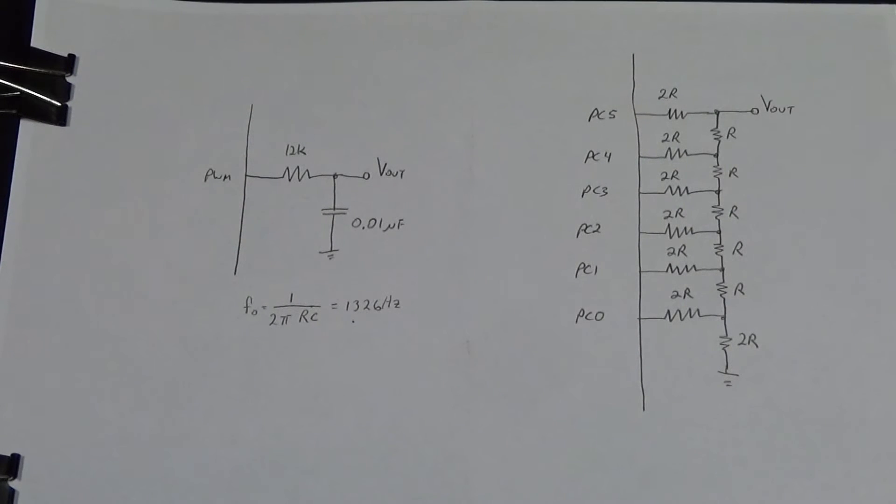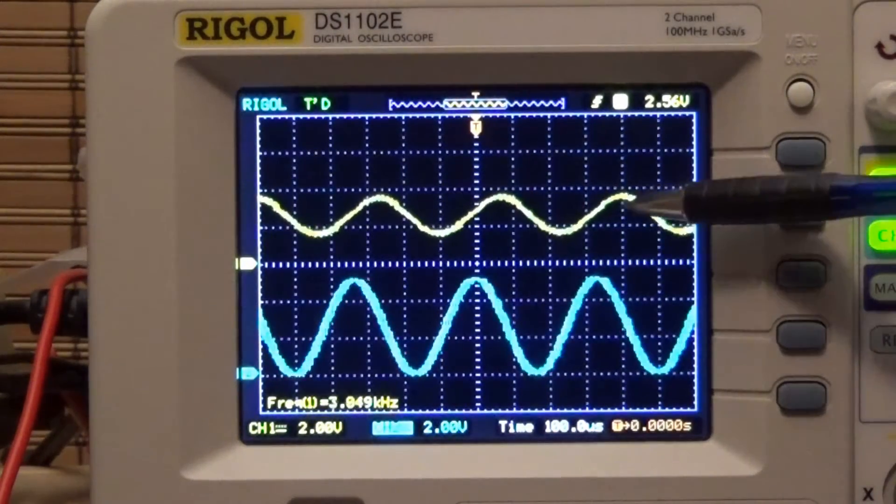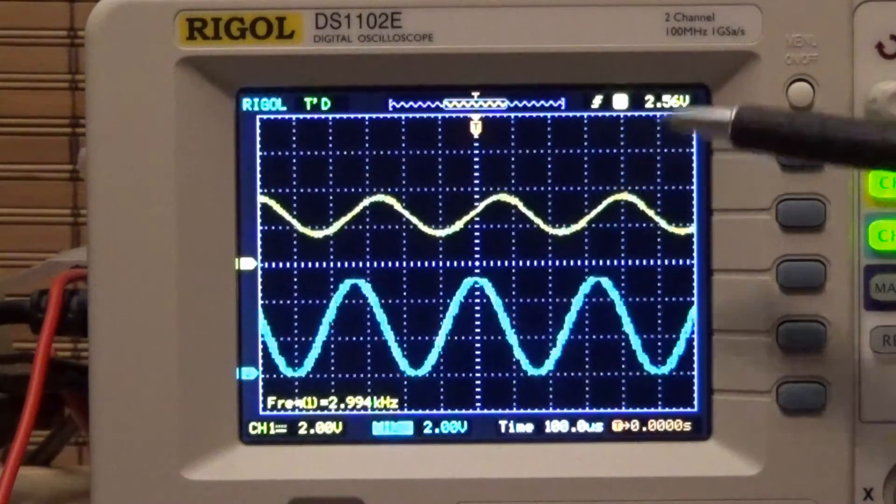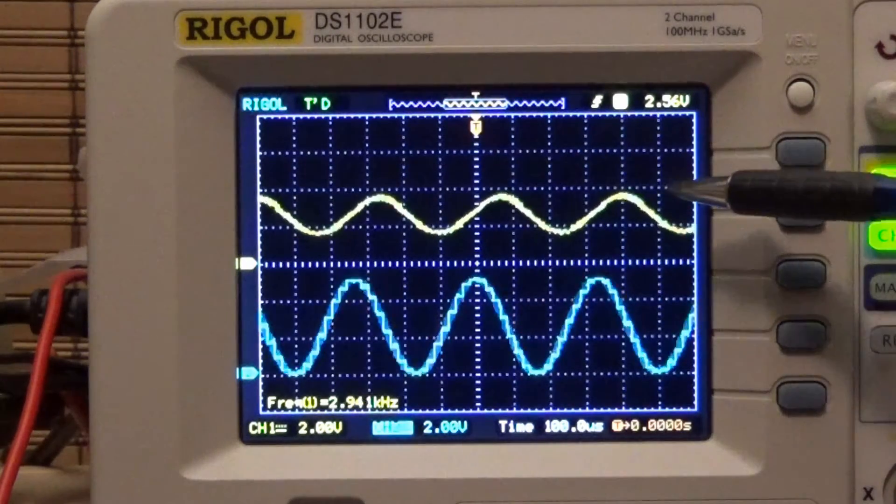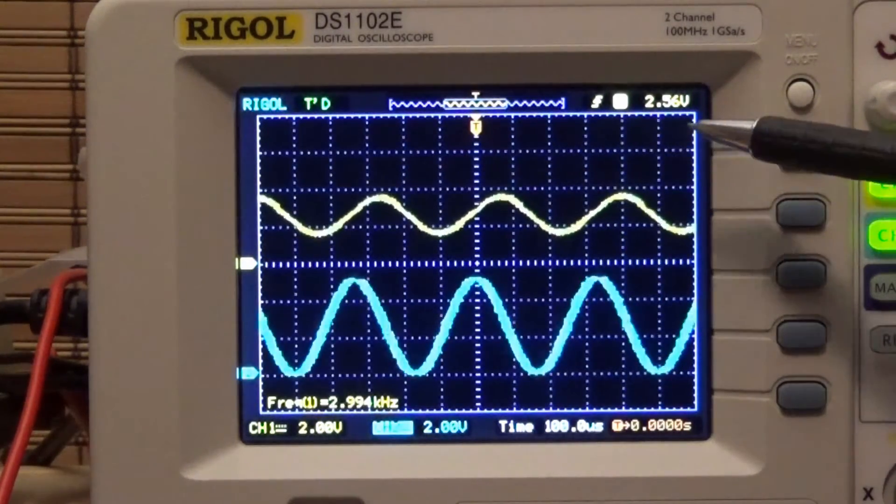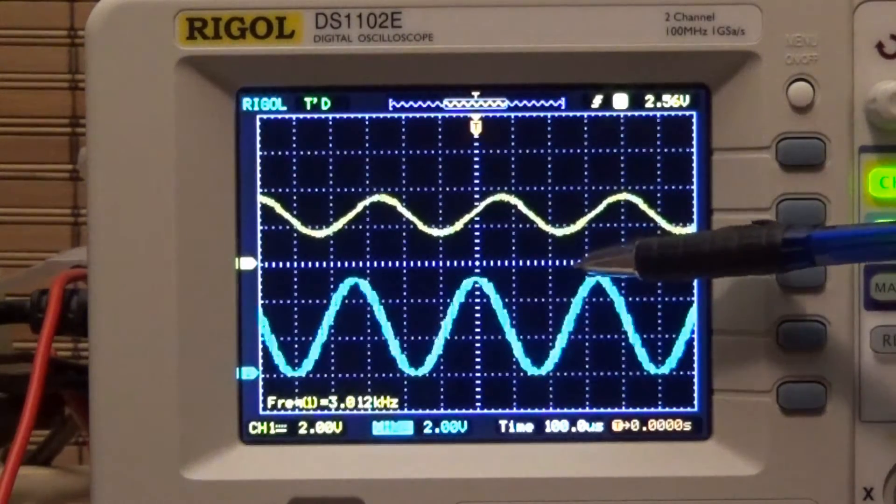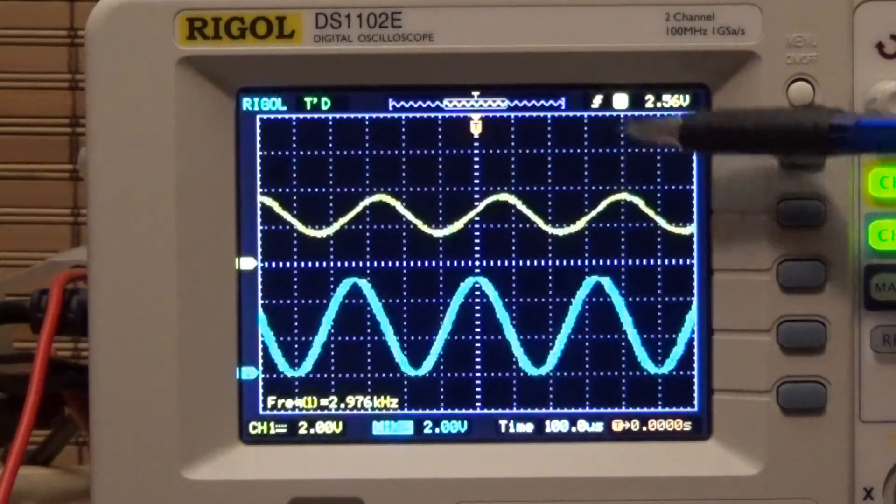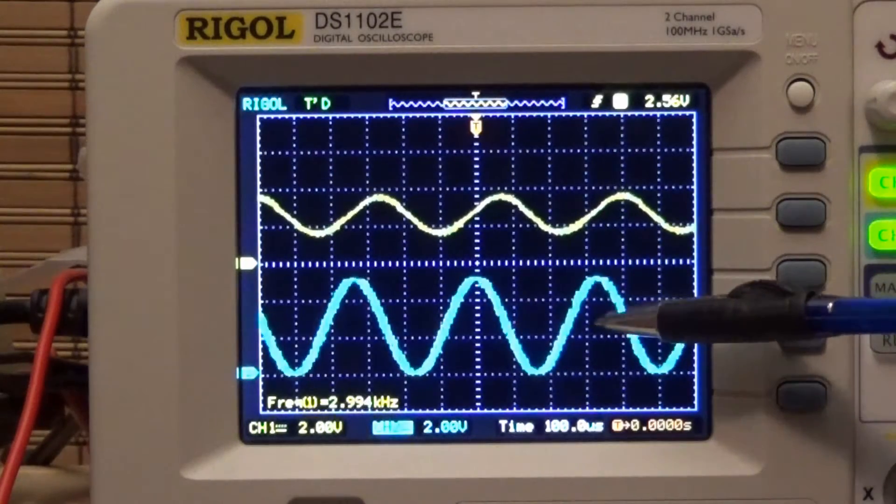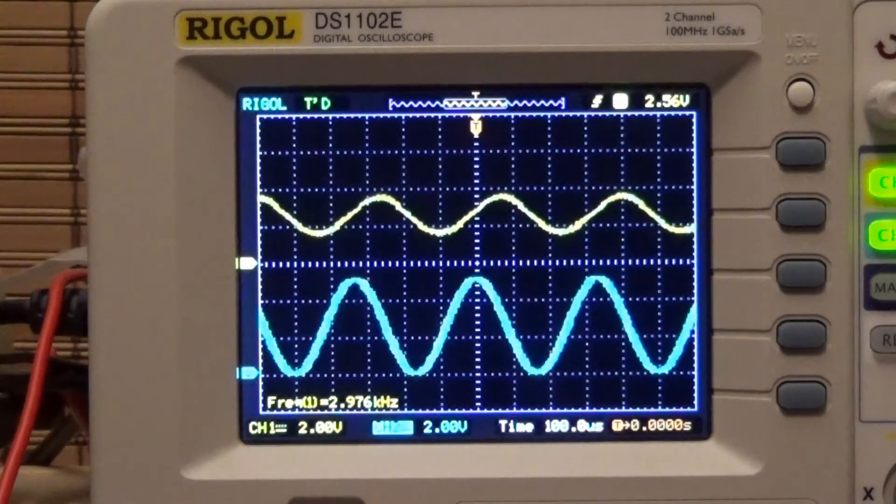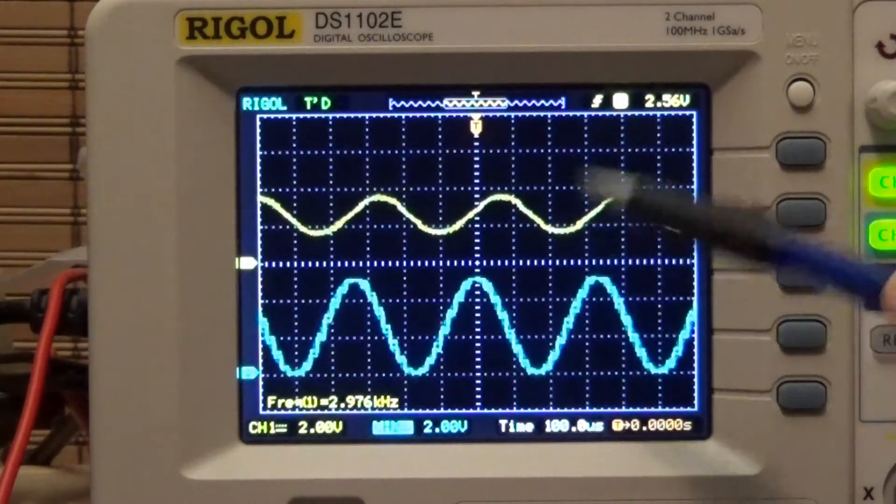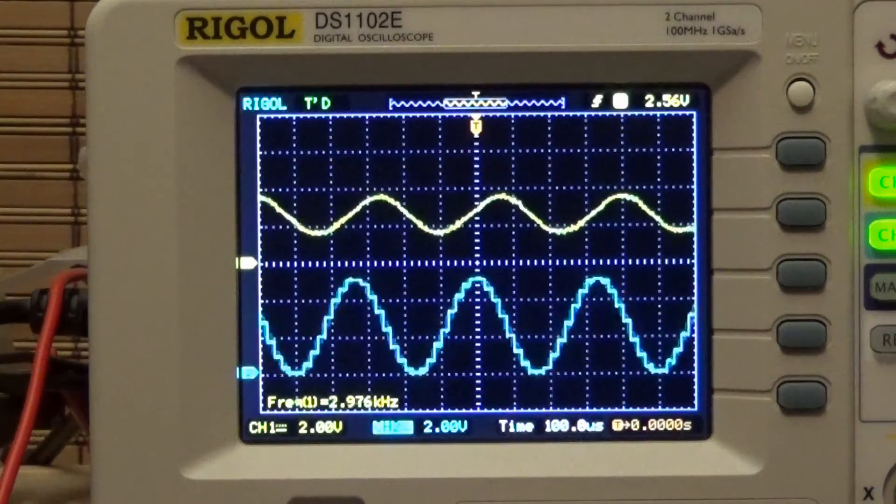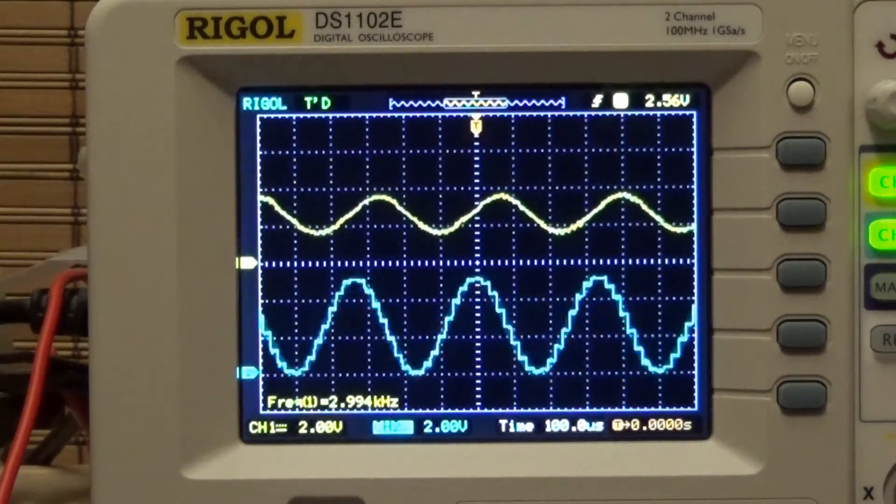So the top trace here is the original filtered PWM output and I've changed the resistor back to the 12k so that it was working a bit better and you can definitely see that it's not reaching ground here, it's not going to five volts up here. This blue trace here, the bottom trace is the ladder output and you can see how it's actually traversing a full five volts even though our frequency is quite high.